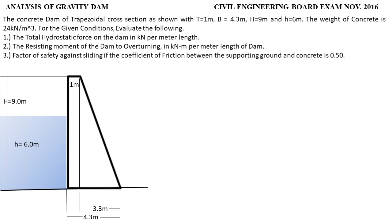Number one: the total hydrostatic force on the dam in kilonewton per meter length. The total hydrostatic force is the resultant of the pressure of the liquid. Since the problem asks per meter length, we will consider this dam in a per meter strip — we take only a 1-meter strip of the dam.